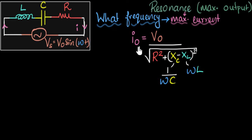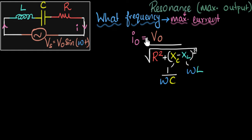It's for that reason we are now asking the question. Because the current depends on the frequency, the question becomes: at what frequency do we get maximum output? In any circuit, we would be interested in getting the maximum output. So the question is, if I kept everything else the same but just changed the frequency, for what frequency will I get maximum current?